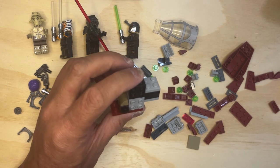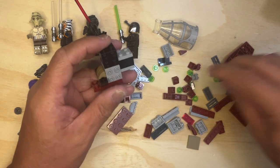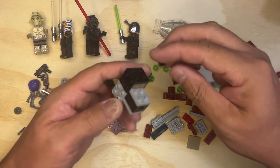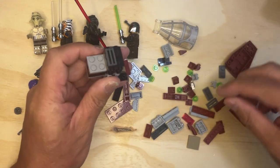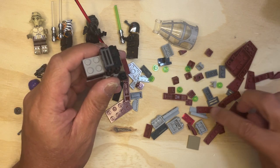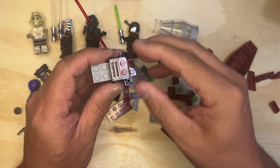Yep, yep, yep. Looks good, looks good. Okay, so now I need one of these gray pieces and make sure I'm doing this correctly. And then I need a one by two dark red like that.